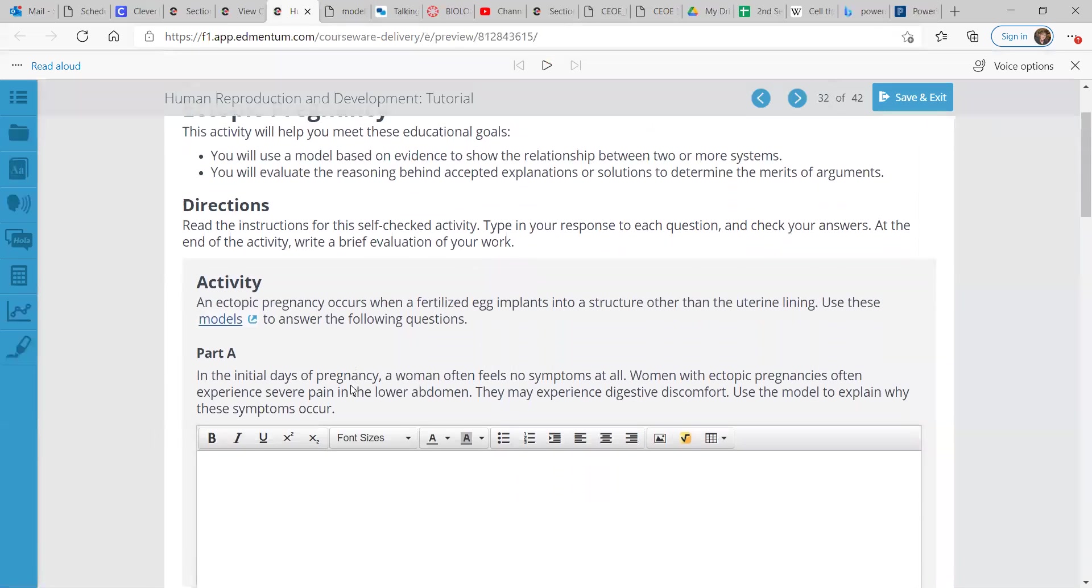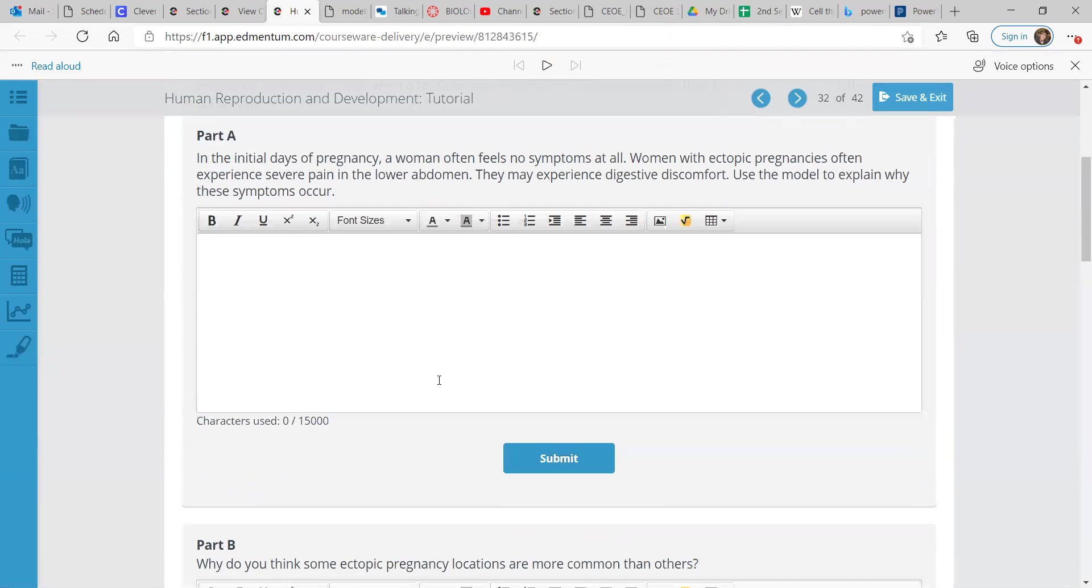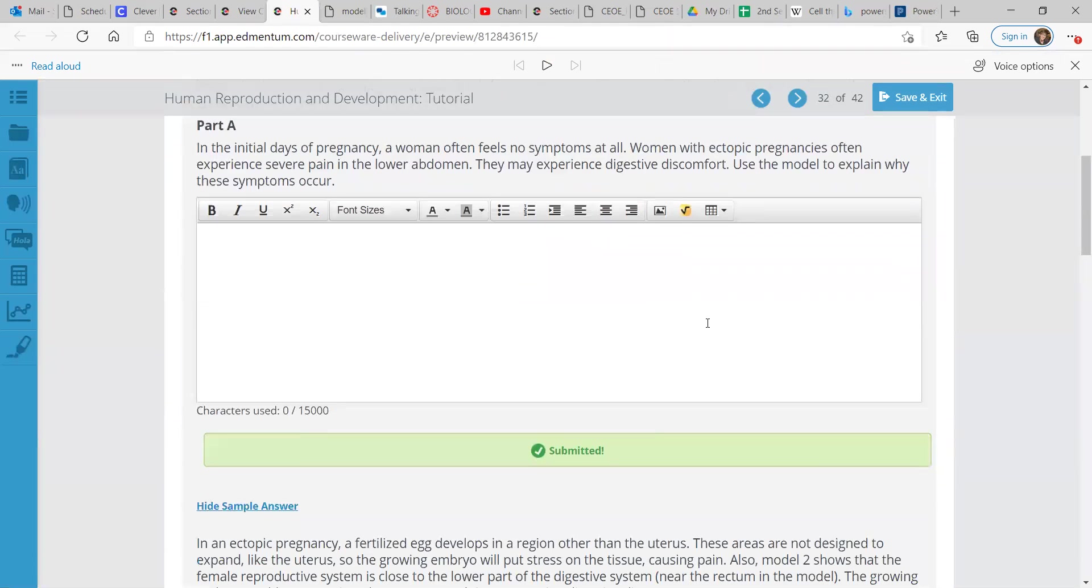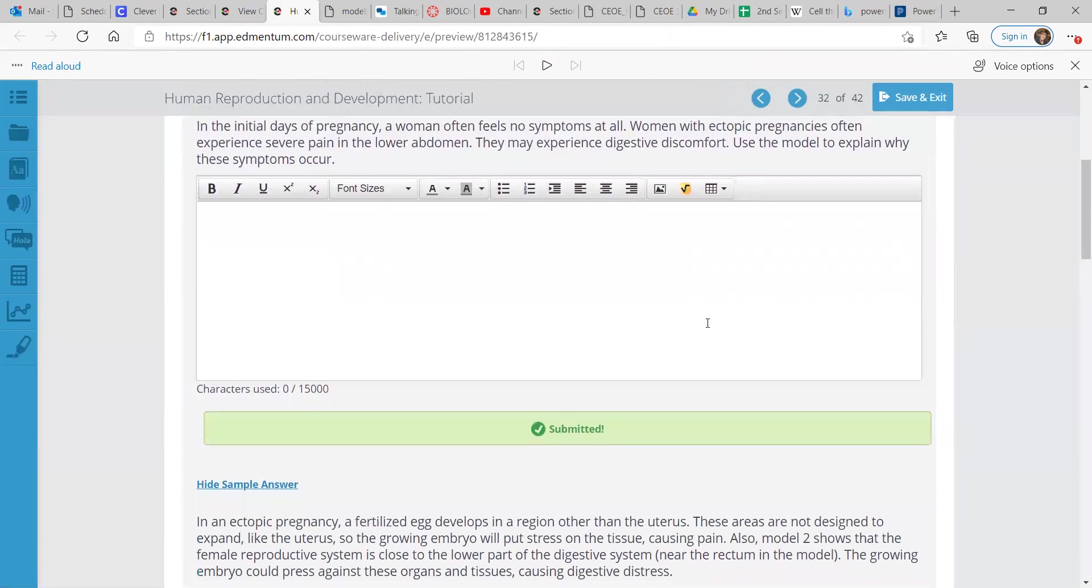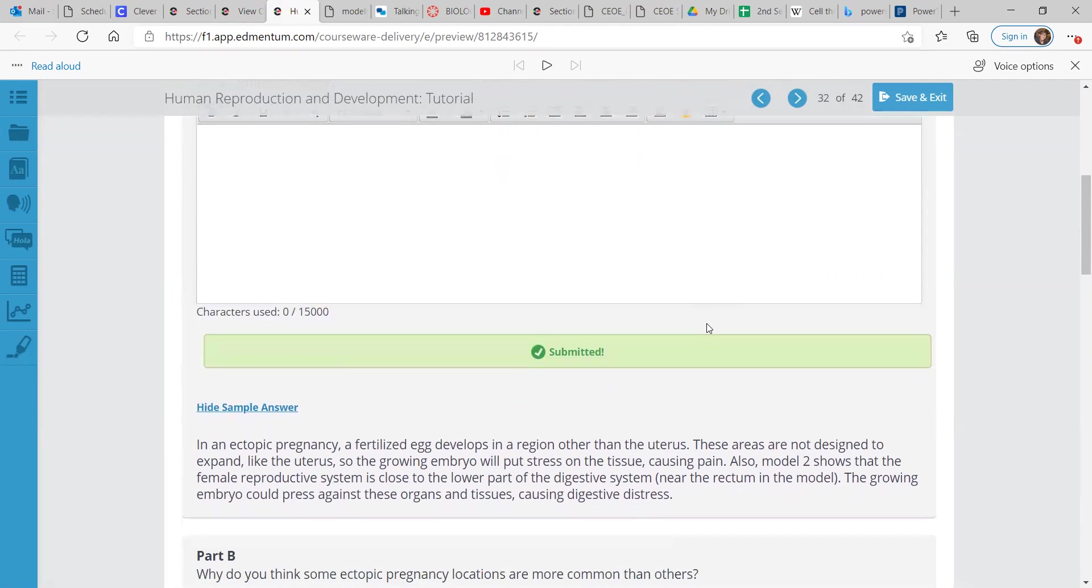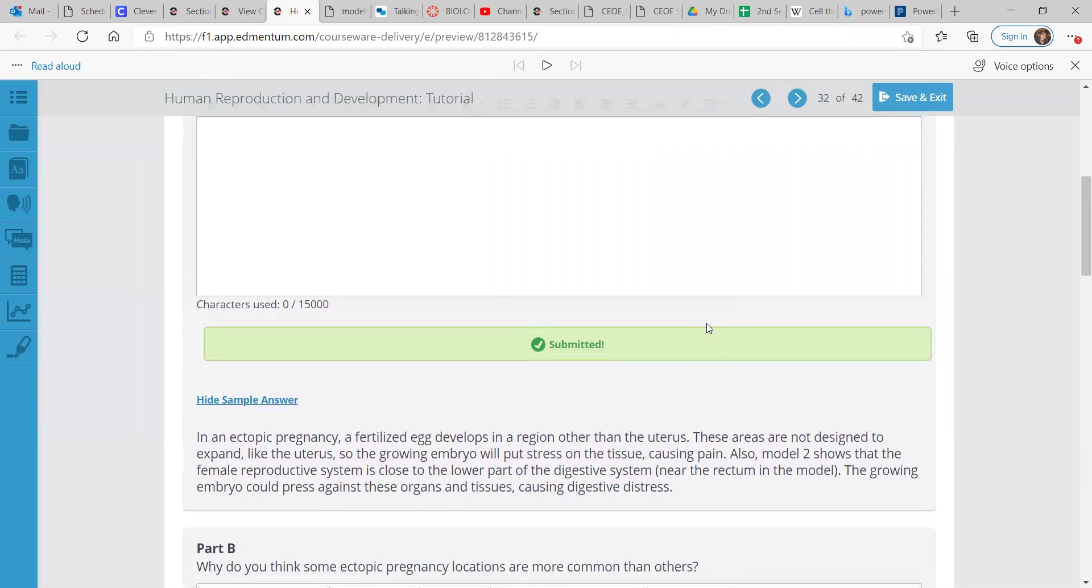So, using this model, we're going to answer these questions. In the initial days of pregnancy, a woman often feels no symptoms at all. Women with ectopic pregnancies often experience severe pain in the lower abdomen. They may experience digestive discomfort. Use the model to explain why these symptoms occur. Well, if you go back to those models, a fertilized egg develops in a region other than the uterus. These areas are not designed to expand like the uterus. So, the growing embryo will put stress on the tissue causing pain. Also, in model two, it shows that the female reproductive system is close to the lower part of the digestive system, and the growing embryo could press against these organs and tissues causing digestive distress.